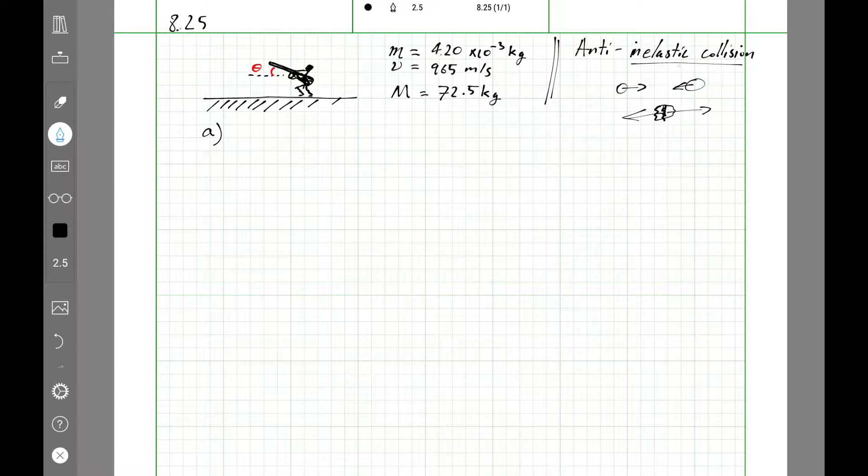In this anti-inelastic collision, two things start out stuck together, like the bullet and the rifle, and then they come apart. So the two pieces fly apart when they were once stuck together. That's what I mean by an anti-inelastic collision.